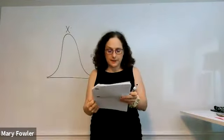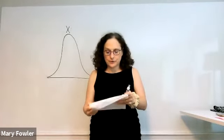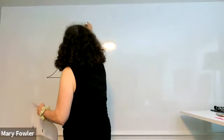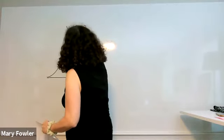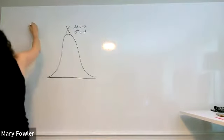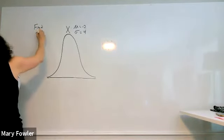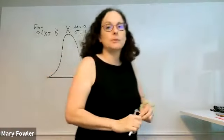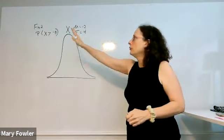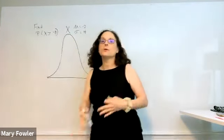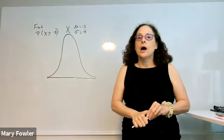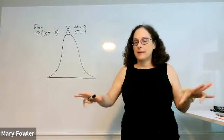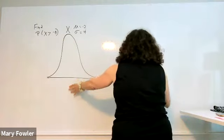We're going to look at the problem that says for a general normal random variable X with the mean of minus 2 and a standard deviation of 4, find the probability that X is greater than minus 3. That's the statement of the problem. And what I want to do before we get too much into the actual statement of the question is I want to draw a template for how we're going to work these general normal random variable questions. We'll always work with the two bell method.